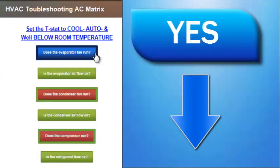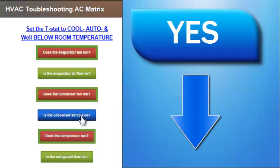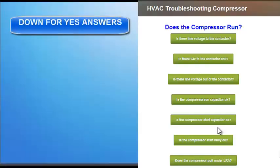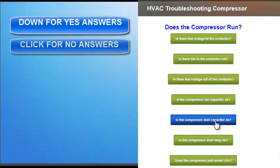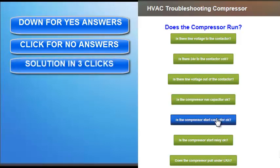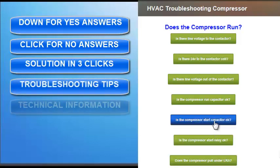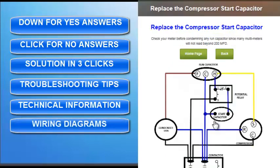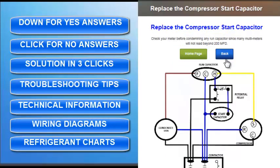Any yes answer moves the technician down the matrix to the next question on the currently displayed list. If a technician is unsure or answers no to any question, clicking on the question takes them to the next diagnostic step or to a final solution. In most cases, the distance between a beginning question and a final solution is no further than three steps or clicks within the matrix. A number of practical tips, technical information, and in some cases wiring diagrams or charts are included with many problem solutions, to further assist technicians as they transition from the mental process of troubleshooting to the physical procedures of troubleshooting.